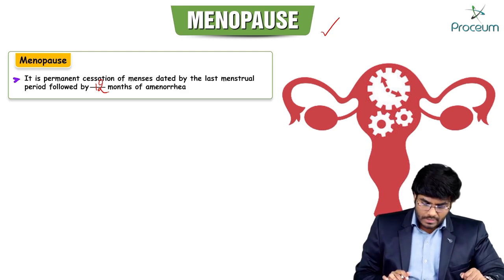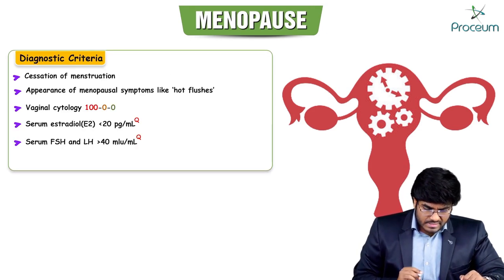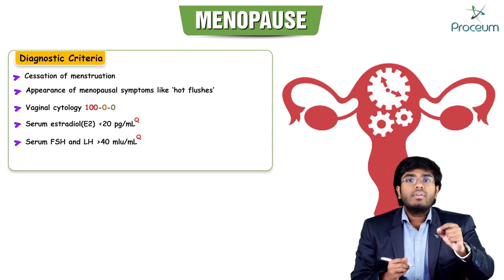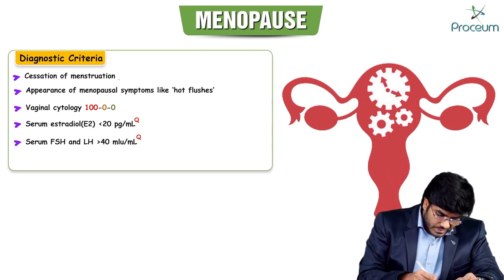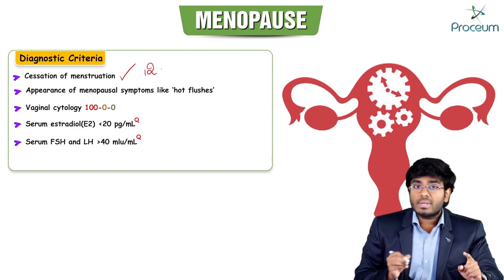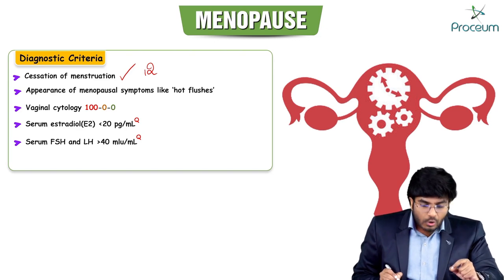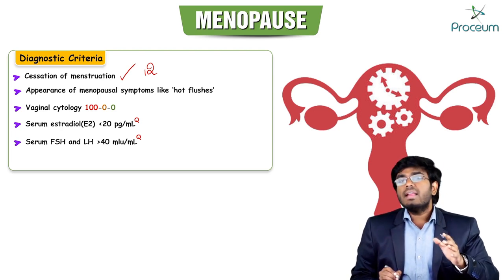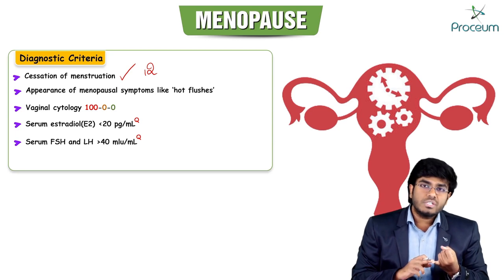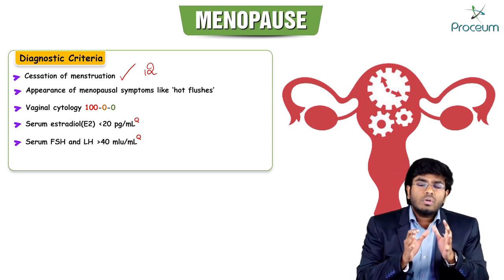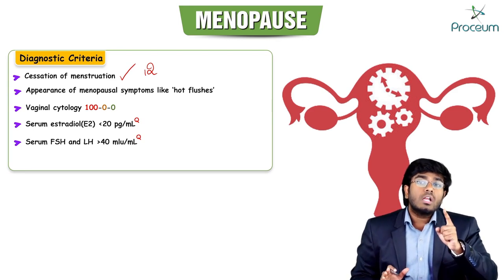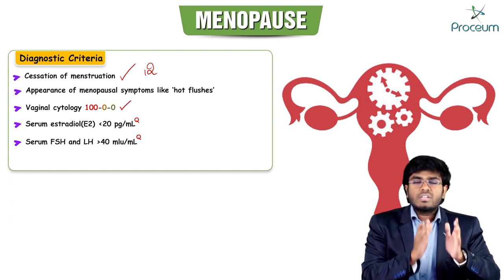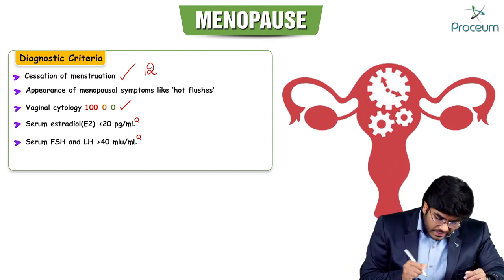Now let's discuss the diagnostic criteria of menopause. The first criterion is cessation of menstruation — 12 months of amenorrhea — followed by the appearance of menopausal symptoms. Whenever a female enters menopause, she will have certain symptoms like hot flushes, osteoporosis, and decreased libido, which can also serve as diagnostic criteria.